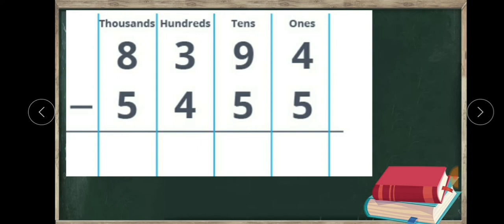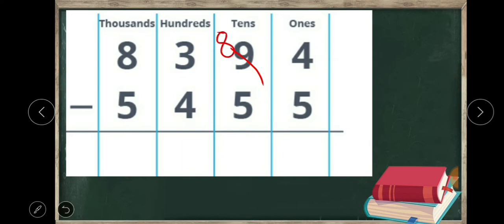Then we start the subtraction from the ones place. The digits in the ones place are four and five. Four minus five — is it possible? No, never, because four is less than five. You cannot take away five from four. So we need to borrow one ten from the tens place. There are nine tens, so we can borrow one ten, leaving eight tens.